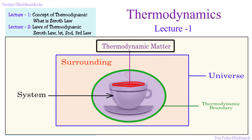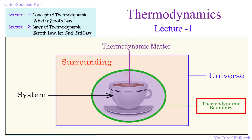The total energy of the system includes internal energy, kinetic energy, chemical energy, and many other things. This is the system where energy transformation takes place, and it is separated from the surrounding by a boundary called the thermodynamic boundary.